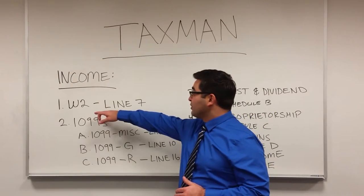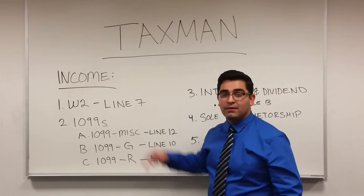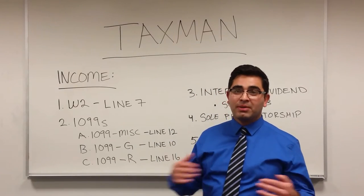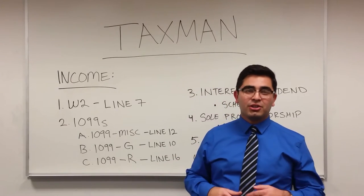Your W-2 income, which is provided to you by your employer, is reported on line 7 of the U.S. 1040 Individual Income Tax Return, and that's the most common form of income in the U.S.